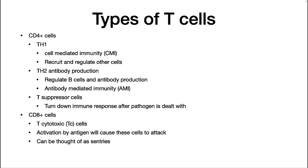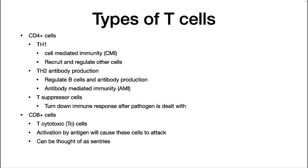All of these antigens and MHC molecules are presented to T cells, so let's go through the different types. There are several types of T cells, but we are going to talk about two broad categories: CD4+ and CD8+ T cells. CD4+ cells regulate the immune system. Three important groups are Th1 cells that recruit and regulate cells involved in cell-mediated immunity (CMI), Th2 cells that regulate B cells and antibody production, and T suppressor cells that help turn down the immune response after it has dealt with a pathogen. The other group are CD8+ cells — cytotoxic T cells. They are activated when their TCR matches an antigen presented in an MHC1 molecule, then attack the cell that activated them. You can think of them as sentries that patrol the body looking for infected cells.